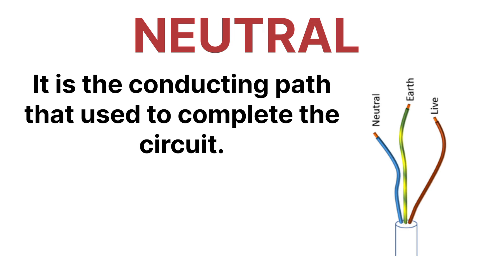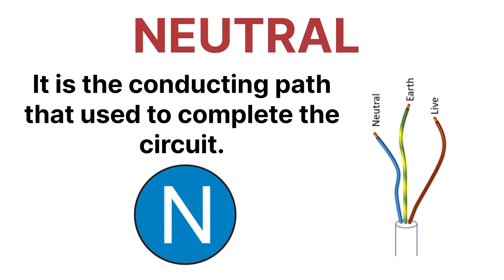So this is the main difference between earthing and neutral: neutral is a purely conducting path for completing the circuit, whereas earthing is a low resistance path used to carry the leakage current. Here you can see the symbol for neutral. This is all about the main differences between neutral and ground.